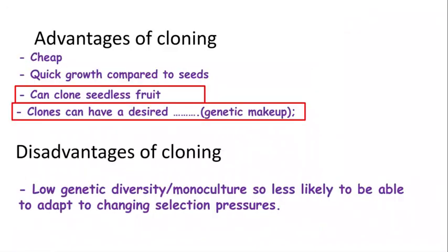There are advantages and disadvantages to cloning. The advantages for horticulture include being able to clone seedless fruit — for example, seedless grapes — since seeds are normally used for reproduction. Clones can also have the desired genetic makeup for certain traits, such as strawberries with a desired juicy taste or red colour. It's important to use the language from the exam question to get your marks. The main disadvantage is low genetic biodiversity, meaning clones are unlikely to withstand change within their environment.